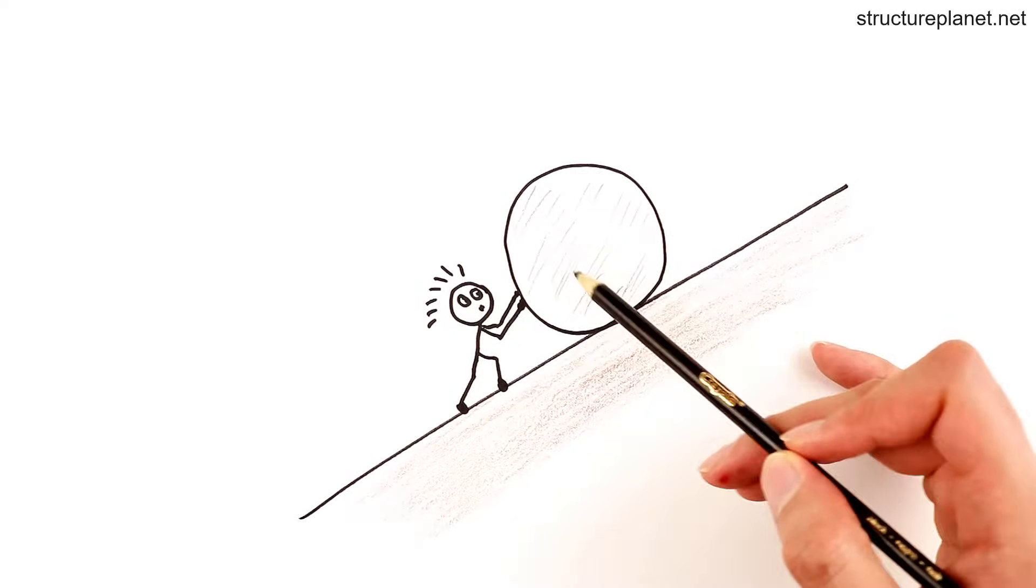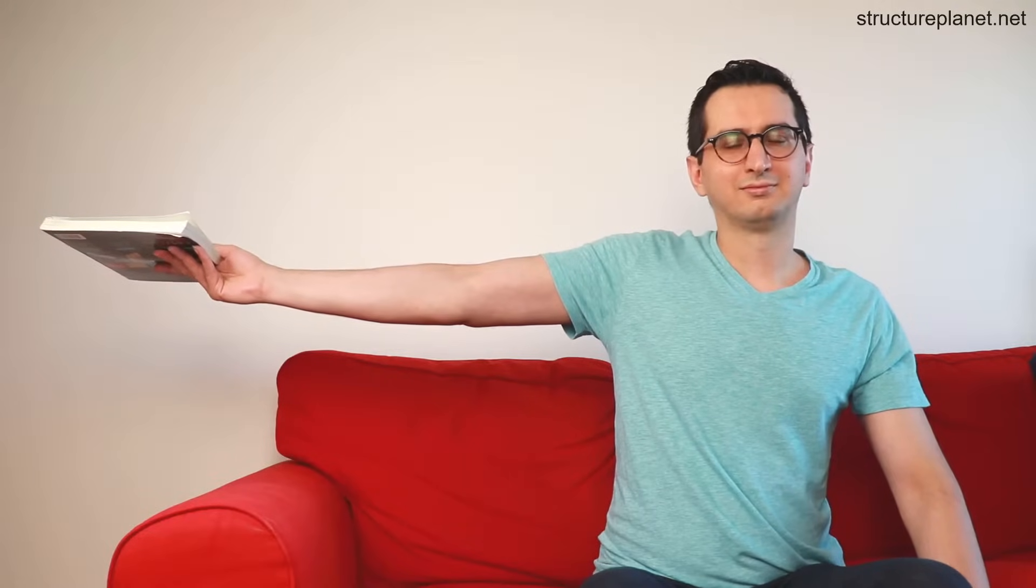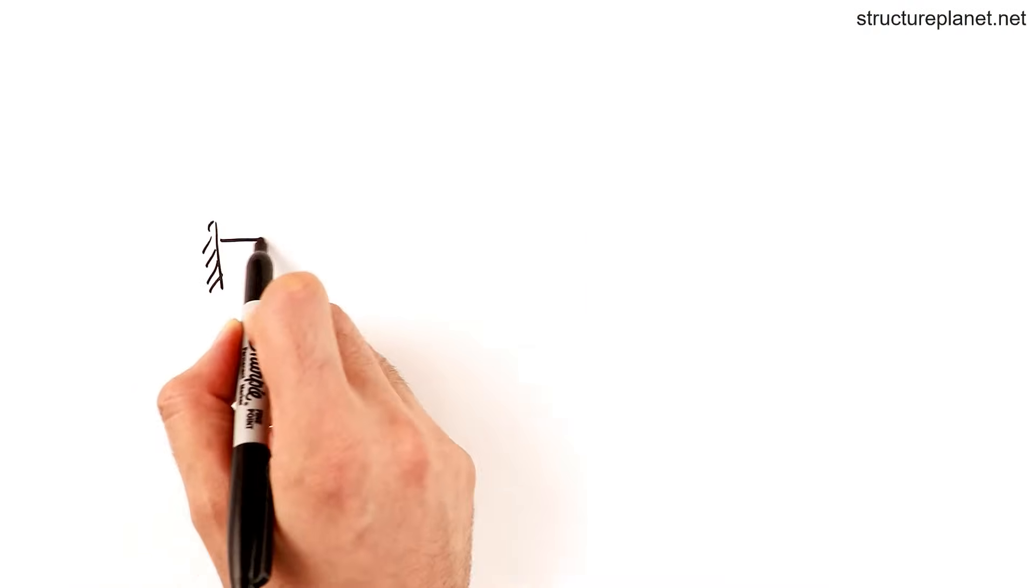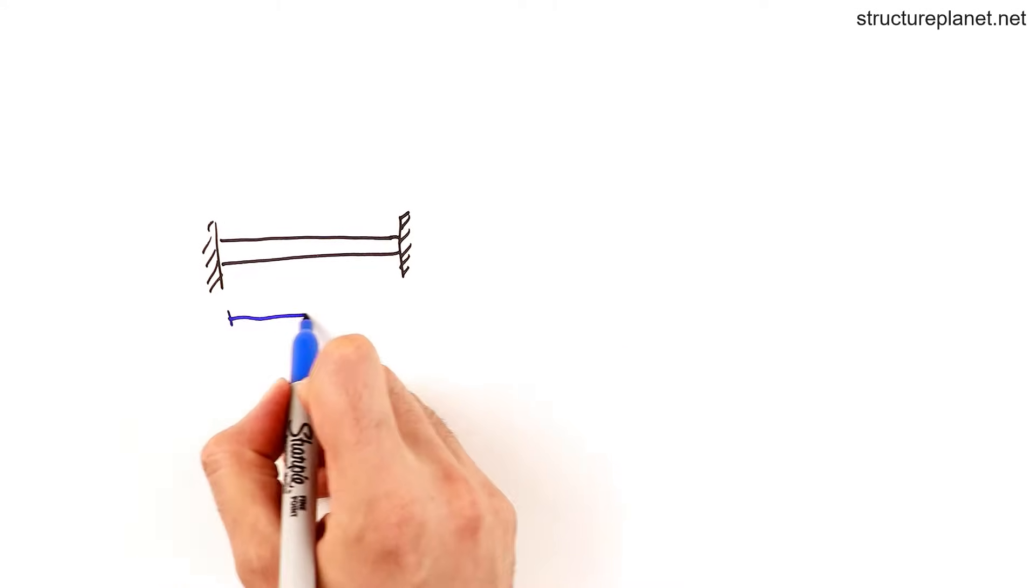To understand the difficulty with cantilevers better, you can try stretching your arm horizontally and try holding a book with your stretched arm. You can feel the downward movement of your arm right away. So let's see what the challenges are.